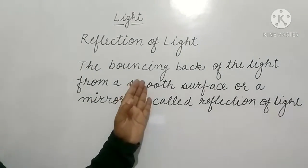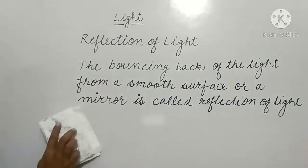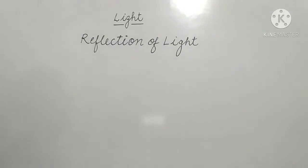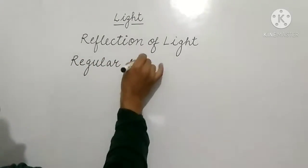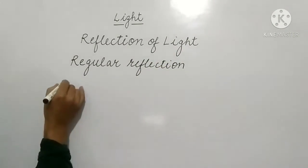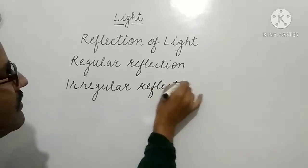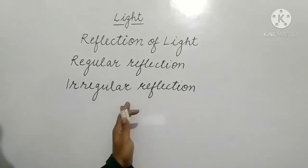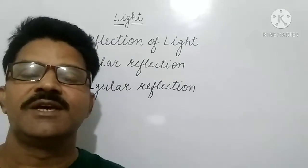There are two types of reflection. The first is regular reflection and the second is irregular reflection. Regular reflection takes place from a smooth surface, and irregular reflection takes place from a dull or irregular surface.